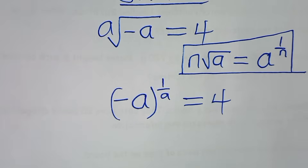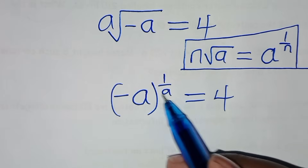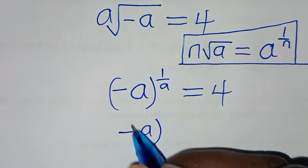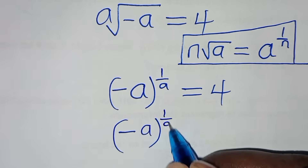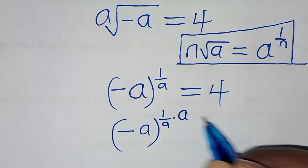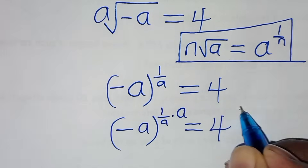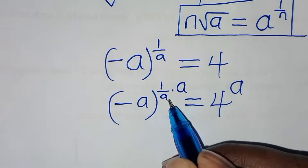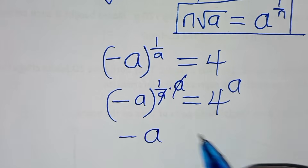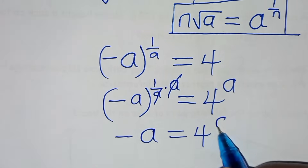The next step is to eliminate the fraction in the exponent. We raise both sides to the power of 8, so that minus a raised to the power of 1 over 8, multiplied by 8 on both sides, gives us: minus a is equal to 4 raised to the power of 8.